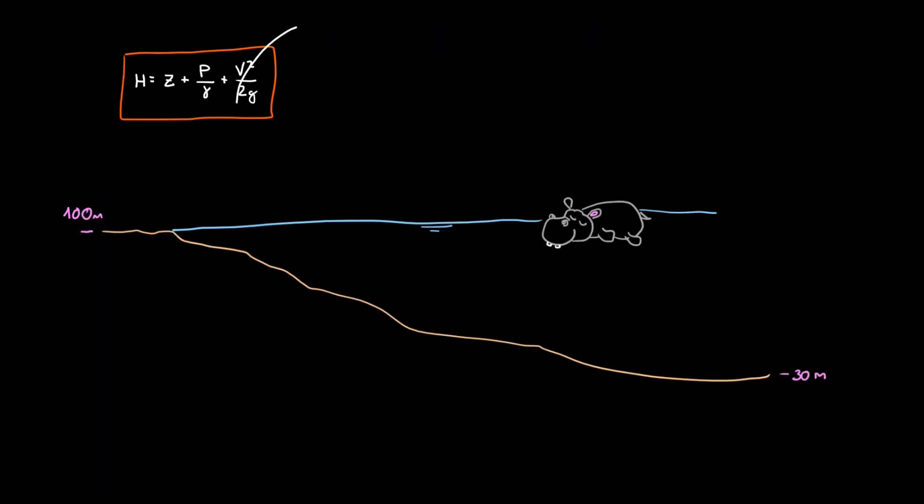This all means that we can simplify the Bernoulli equation to a more user-friendly version. The energy level, also called head, is just the addition of the elevation and the depth for each point in our pond.